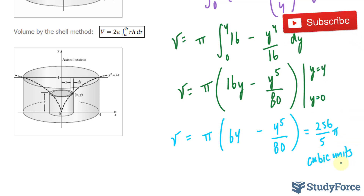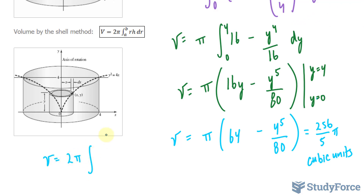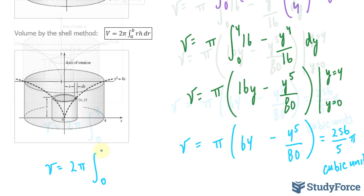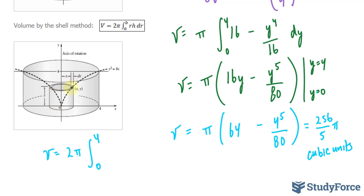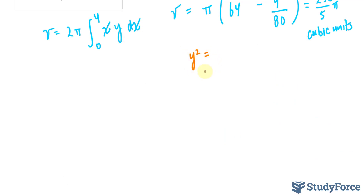Now I'll repeat this using the shell method. The formula is v equals 2 pi times the integral from a to b of radius times height, dx. The bounds will be 0 to 4. The radius will be x, because the radius of the cylindrical shell is relative to the horizontal axis. The height is y. We'll integrate in terms of dx. The function was y squared equals 4x, so square rooting both sides gives y equals 2 times the square root of x — taking only the positive version since we're in the first quadrant.